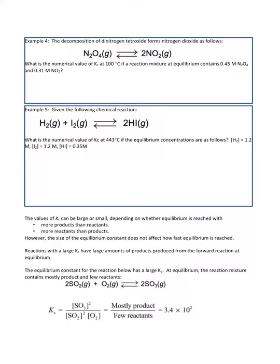We want to know what is the numerical value of Kc at 100 degrees Celsius if a reaction mixture at equilibrium contains 0.45 molar N2O4 and 0.31 molar NO2. Remember that Kc is equal to a fraction with the products in the numerator — the concentration of NO2 raised to its coefficient of 2, so NO2 squared, divided by the reactants.